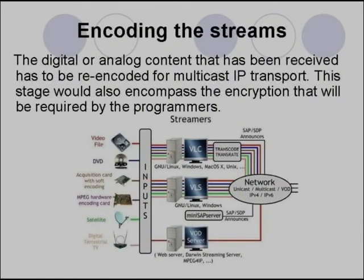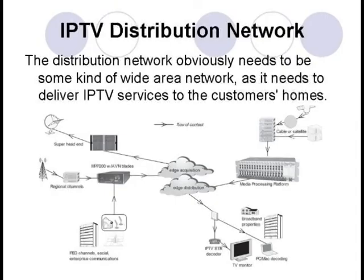The second step is encoding the streams or content. The digital output from the various receivers will be injected into an encoding device to be assigned a multicast IP address. In a standard definition environment, these streams can be encoded in MPEG-2 format or in MPEG-4 format.